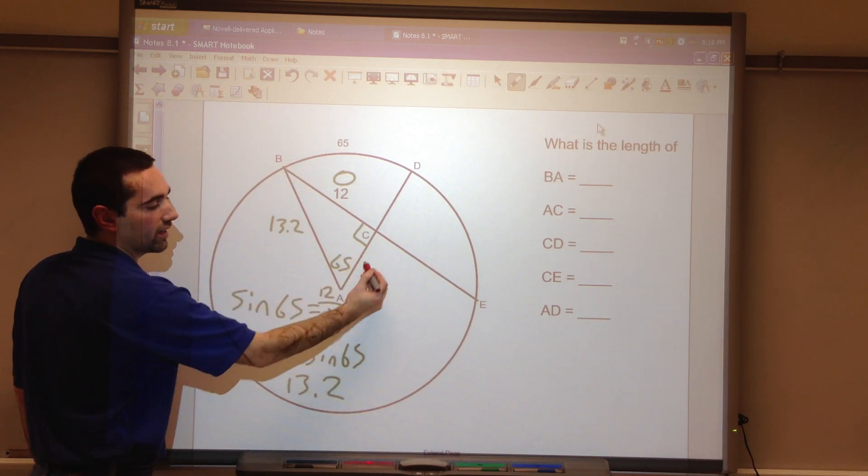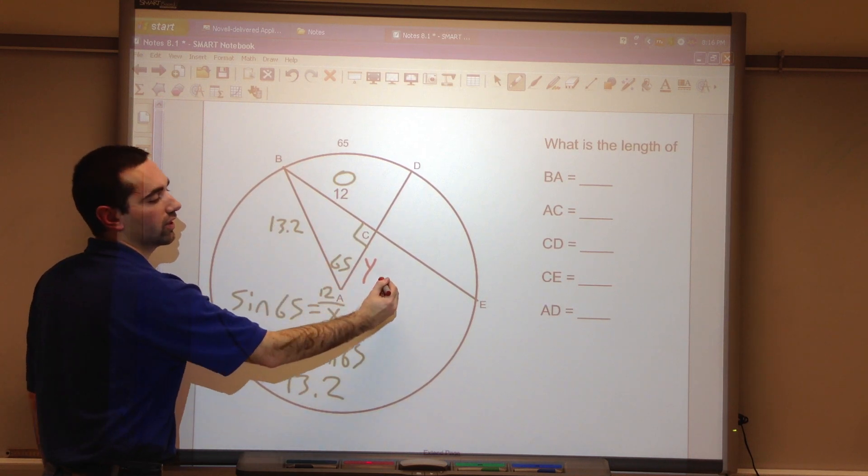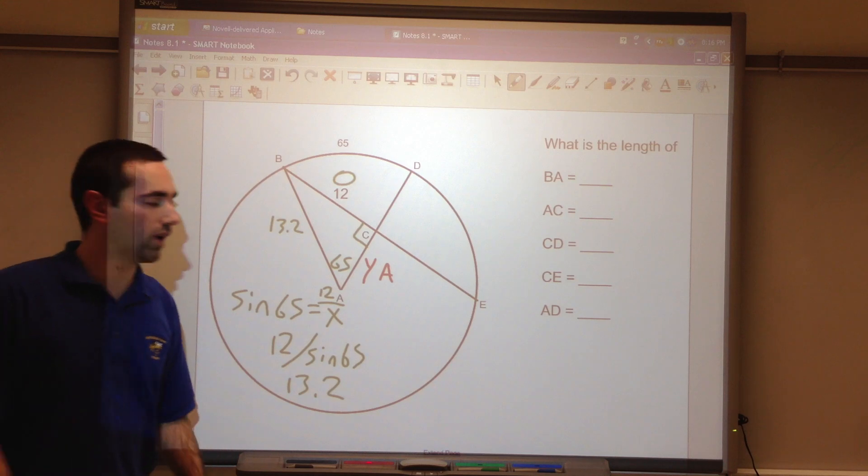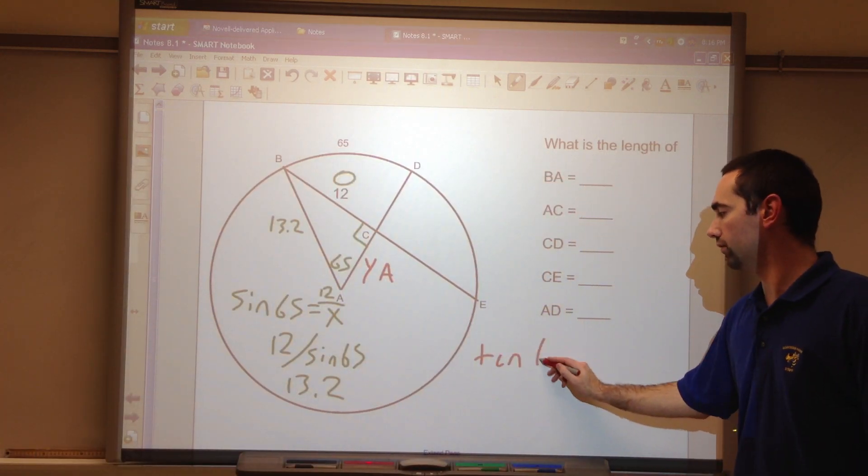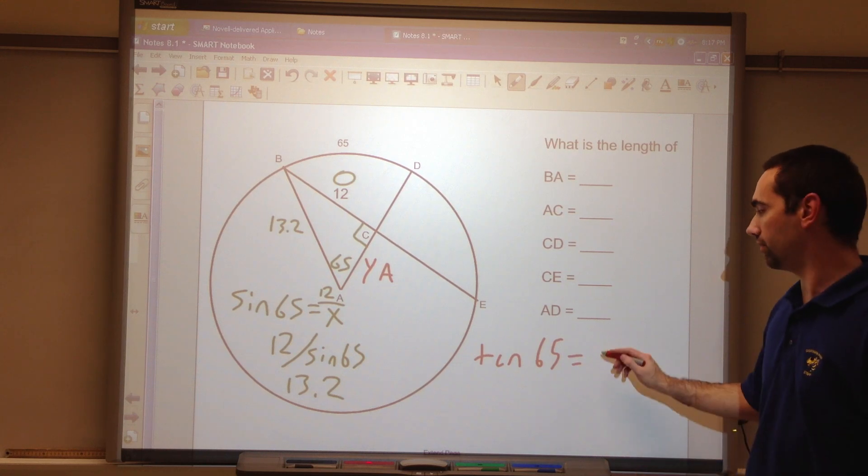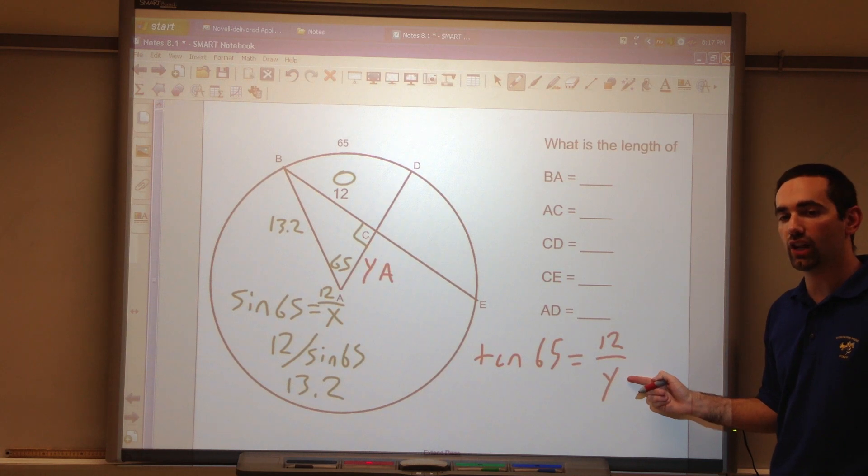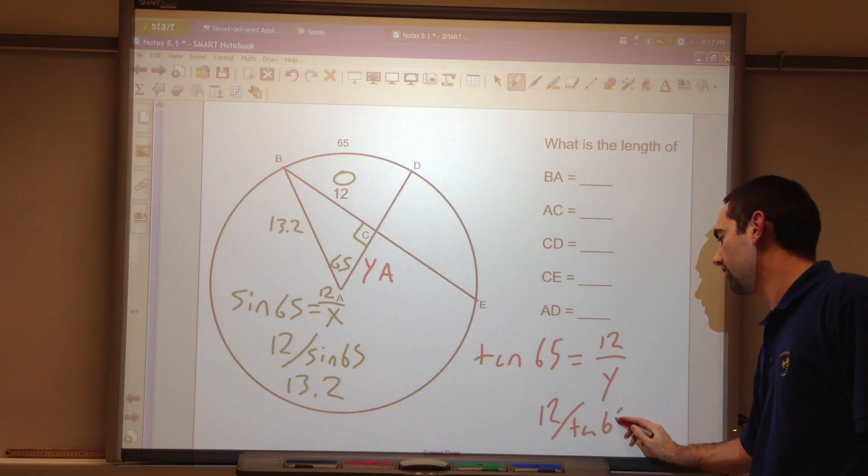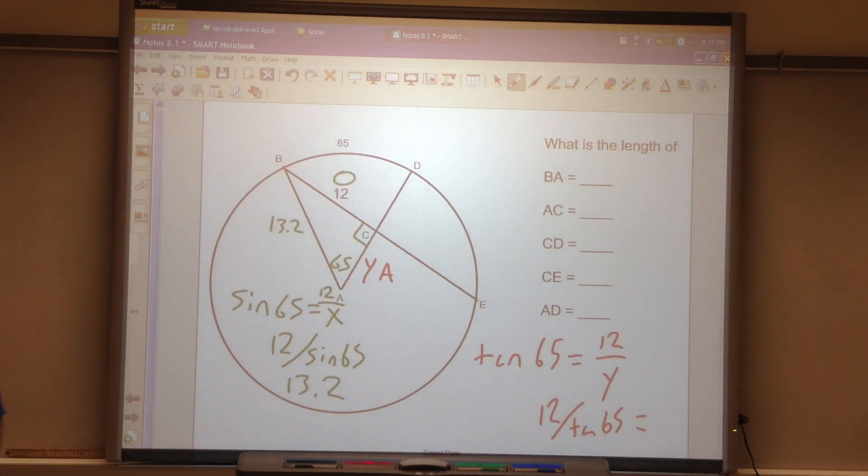Solve for AC. I will call this Y. Opposite. Hypotenuse. Adjacent. OA. TOA, tangent of the angle is equal to the opposite over the adjacent. Y is the denominator. Divide. 12 divided by tangent of 65. We get 5.6.